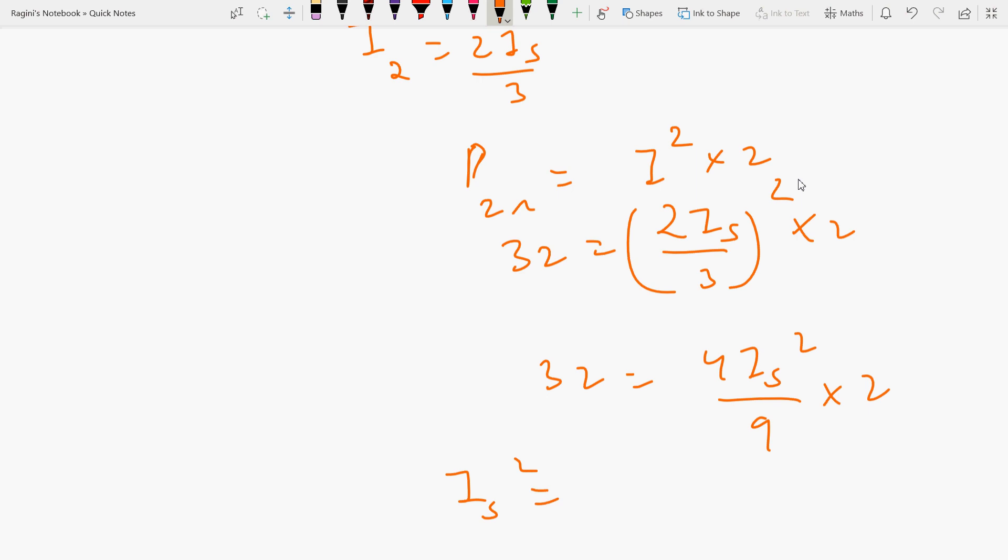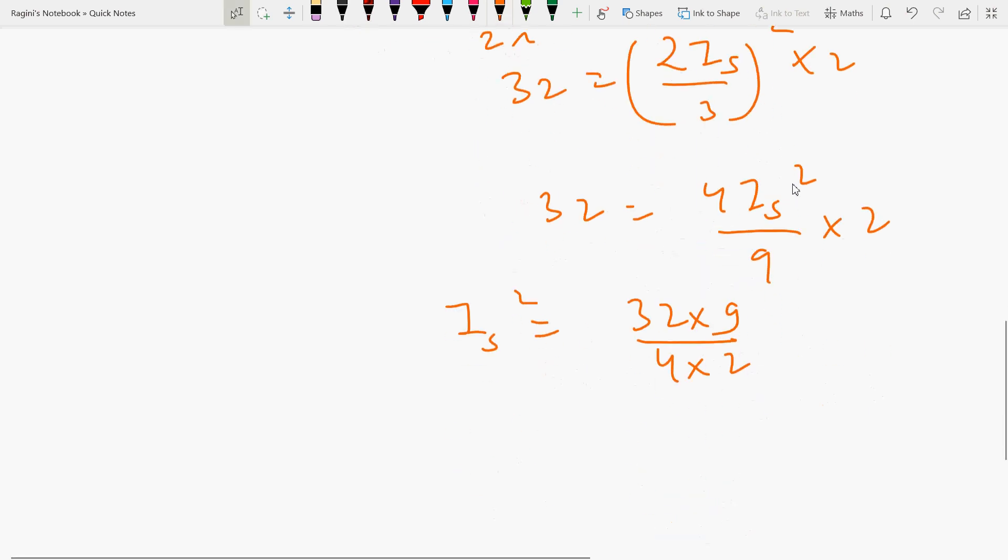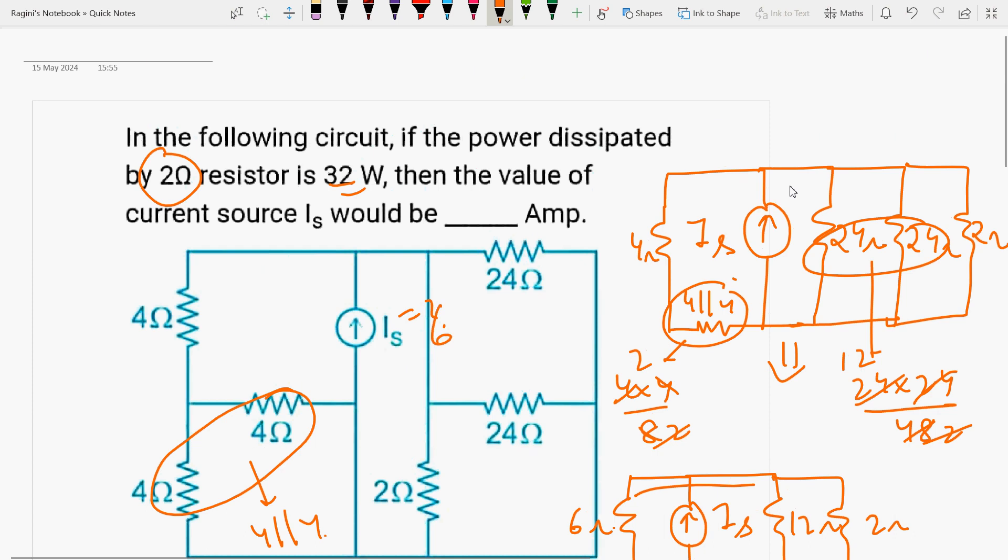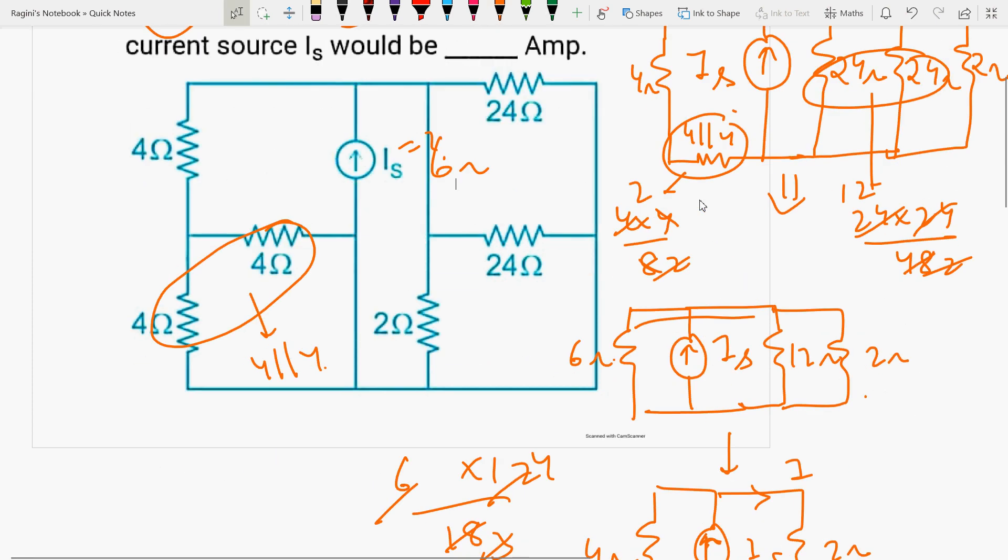Is squared equals 32 into 9 upon 4 into 2. 4 into 32 divided by 4 equals 8. Is squared equals 4 into 9. That means Is equals 2 into 3, equals 6 amperes. So your value is equal to 6 amperes. The main point is that you have to equate the resistance in parallel to series.